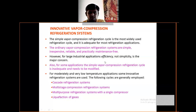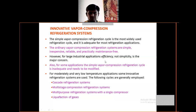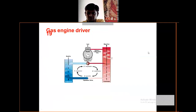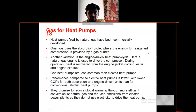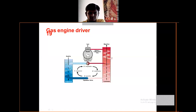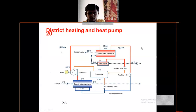The ordinary vapor compression cycle may need to be modified. Modified cycles include the cascade refrigeration system, liquid-gas multi-stage compression refrigeration system, multi-purpose refrigeration systems with a single compressor, and gas engine-driven heat pumps. The district heating heat pump system involves a compressor, condenser, and evaporator working together.